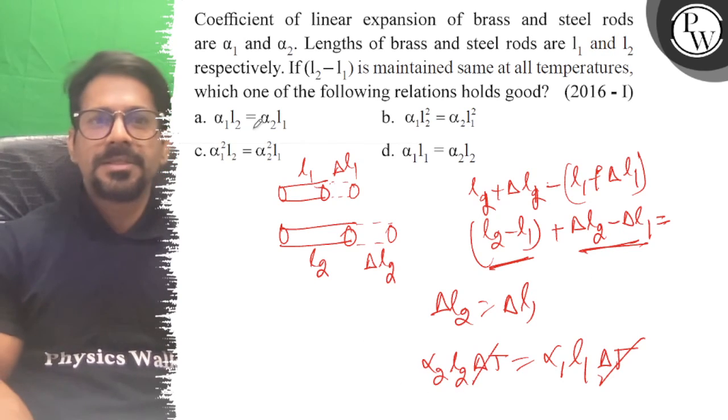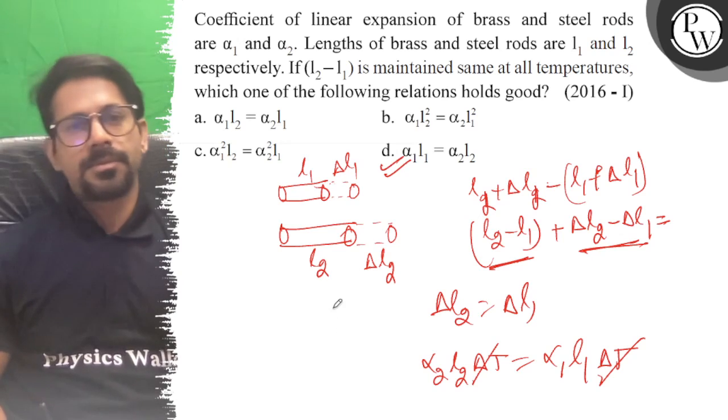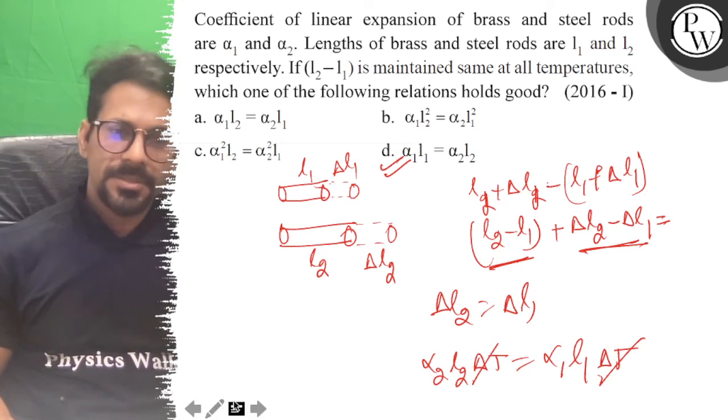And ΔT will cancel out, so the right answer is α₁·l₁ = α₂·l₂. So the right answer to this question is D. All the best!